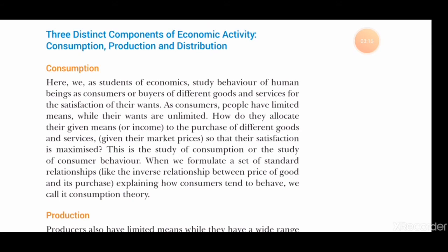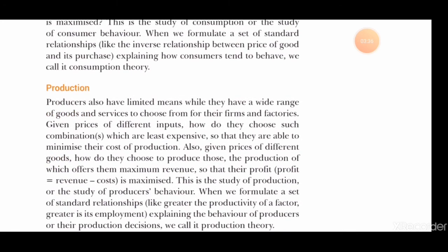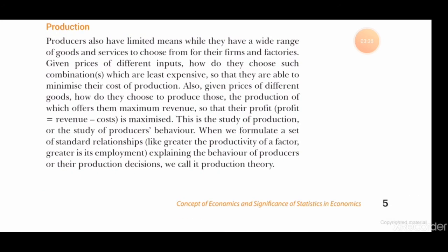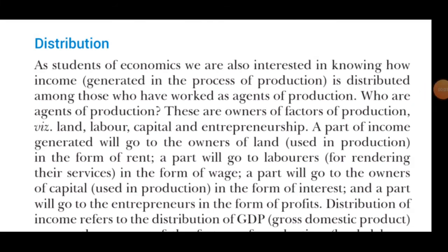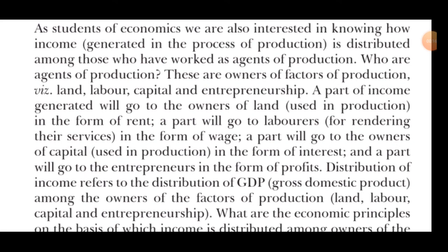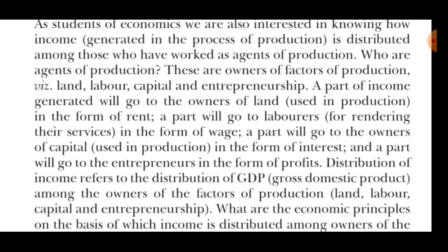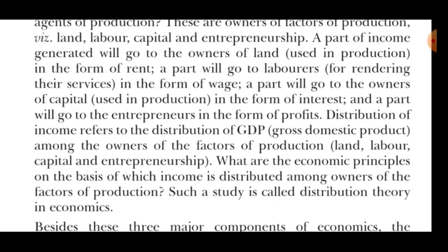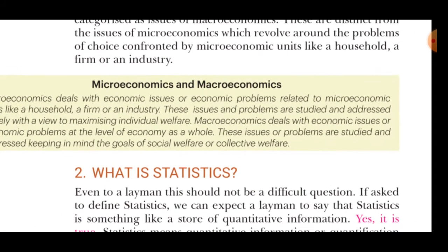Now we move to the three distinct components of economic activity: consumption, production, and distribution. Consumption means using goods and services and getting satisfaction from them. Production means converting any raw material or useless thing into something useful. Distribution means dividing the profit earned among all agents who participated in production — paying rent to land, wages to laborers, interest to owners, and profit to entrepreneurs.